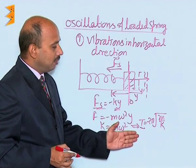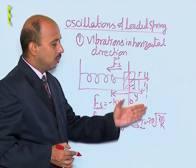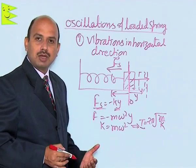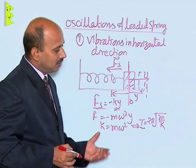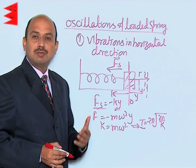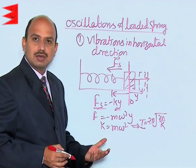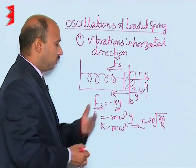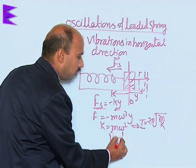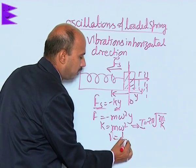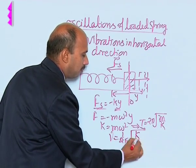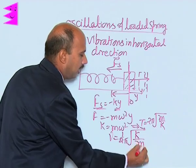So, the time period is given by T equal to 2 pi under root of m upon k, where m is the inertia factor and k is the spring factor. The frequency formula is nu equal to 1 upon 2 pi under root of k upon m.